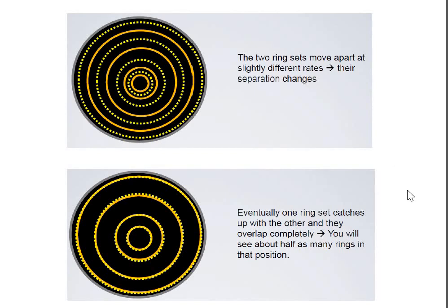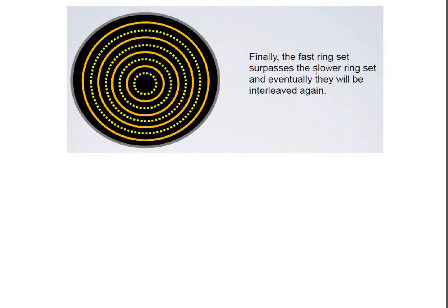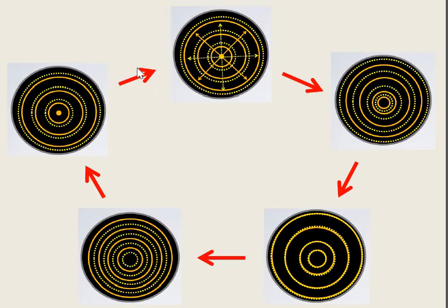Eventually, one ring set will catch up with the other one and they will overlap completely. Then we will see complete bright and complete dark — uniform illumination. In between, there will be an interleaved pattern, then when there is complete overlap, the overall ring set shows uniform illumination. Finally, again the faster ring set will surpass the slower ring set and they will be interleaved again.